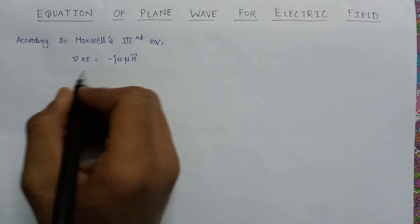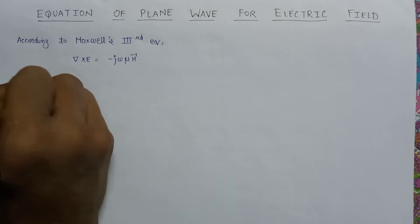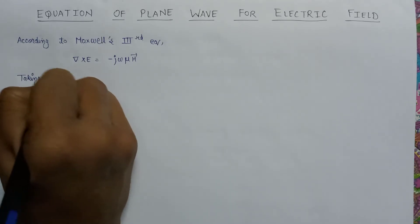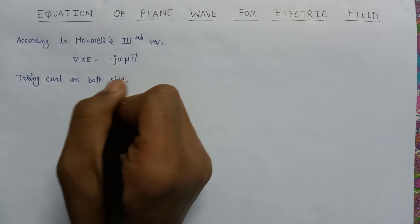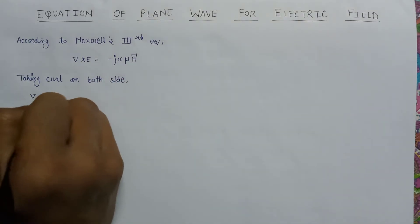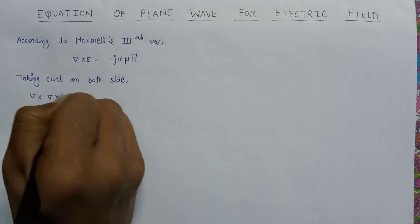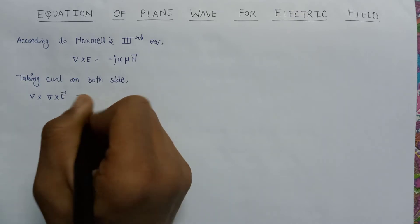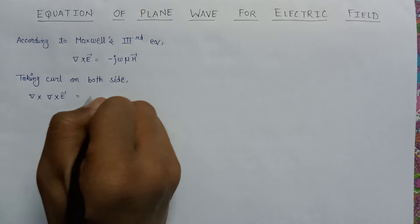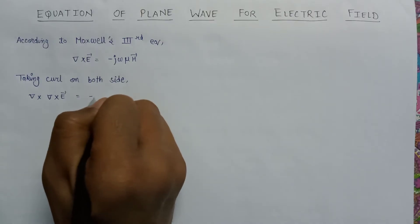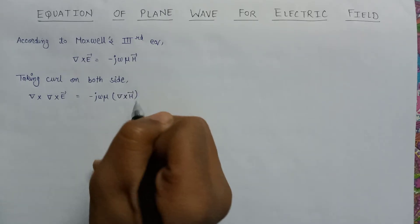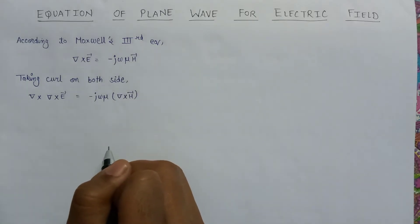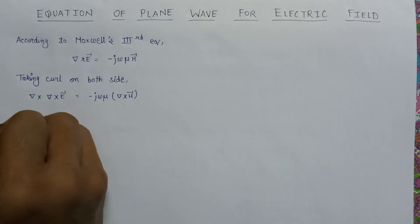Now on taking the curl on both sides, we can write del cross del cross E, which is being equal to minus j omega mu into del cross H. We also know that the vector identity is given as: